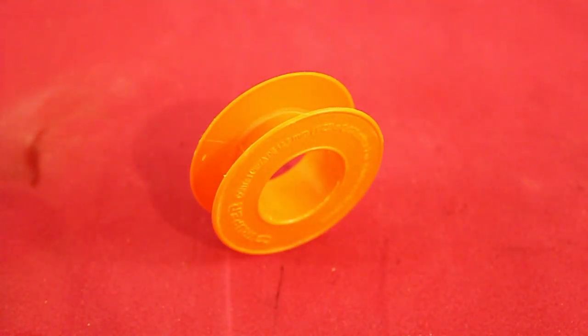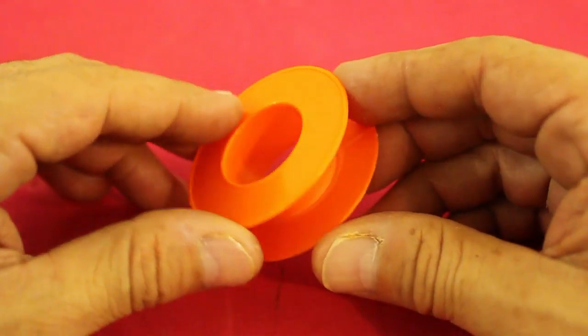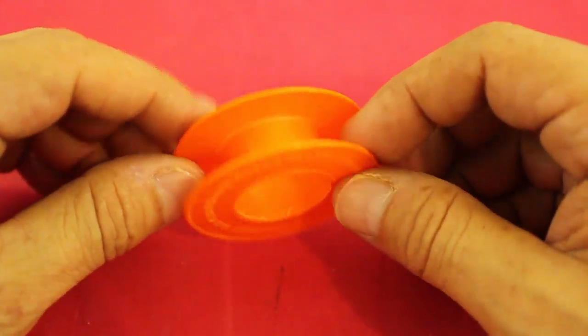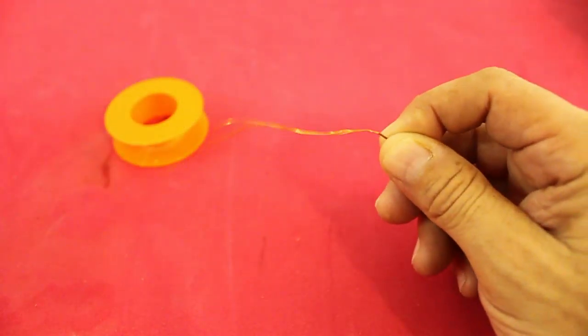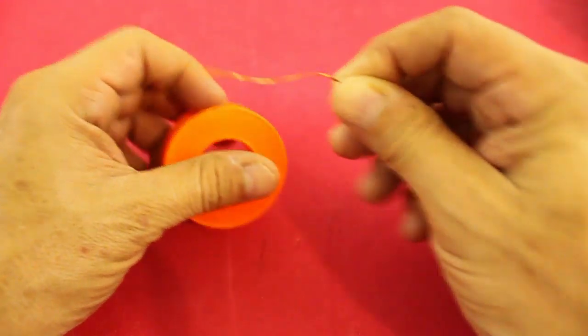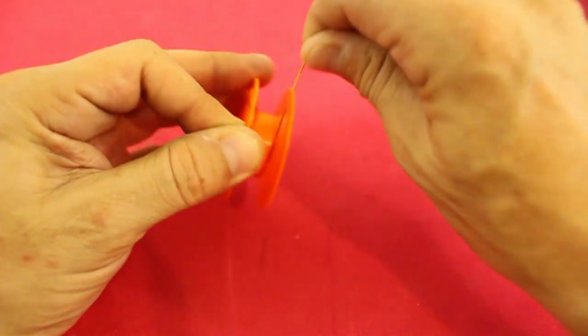We need a plastic bobbin to make the coil. This for example is from a teflon tape that you can get at any hardware store. Take the two wires, leave some centimeters for the connections and start binding.